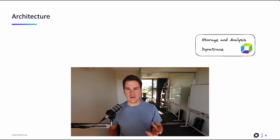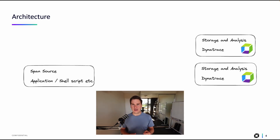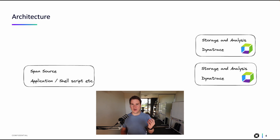First, we're going to need somewhere to store, analyze, and view this data — that will be Dynatrace. The next thing we need is a source of spans. In a web world, that would be your browser, your web server, your application servers, and your microservices. However, OpenTelemetry is unopinionated about this and you can trace pretty much anything. In this video, I'm going to show you how to trace a shell script, for example.